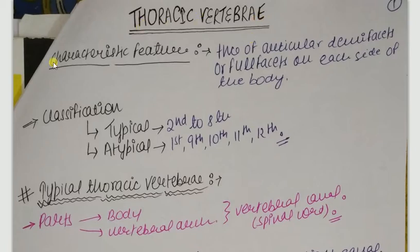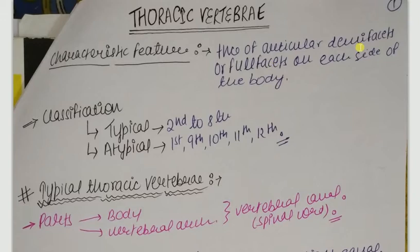Thoracic vertebrae - what is the characteristic feature by which we will identify that this is a thoracic vertebrae? On each side - left side as well as right side - of the body of thoracic vertebrae, you will see there will be articular facets. The facets can be demifacets, that is half or semi-facets, or the facets can be full facets. If on the side of the body of a vertebra you see articular facets, then that vertebra will be a thoracic vertebra only.